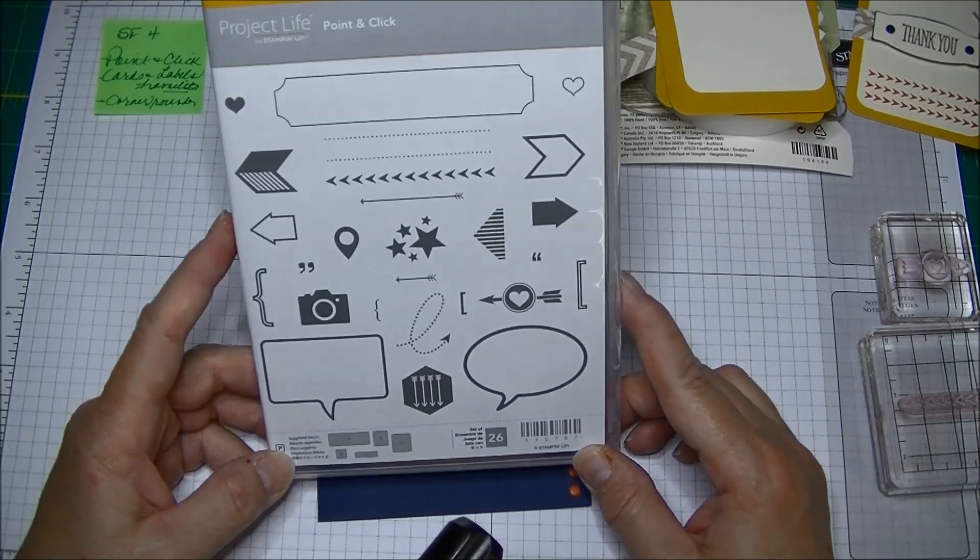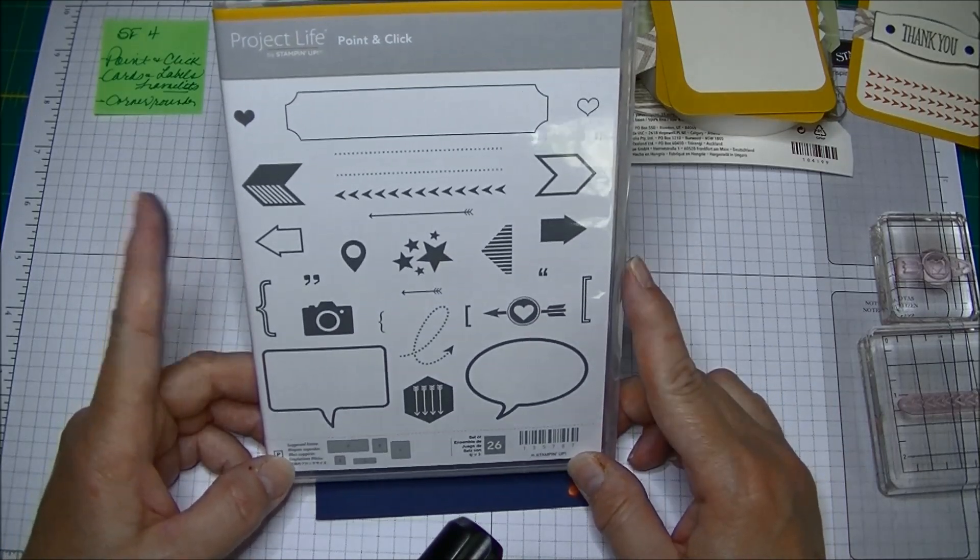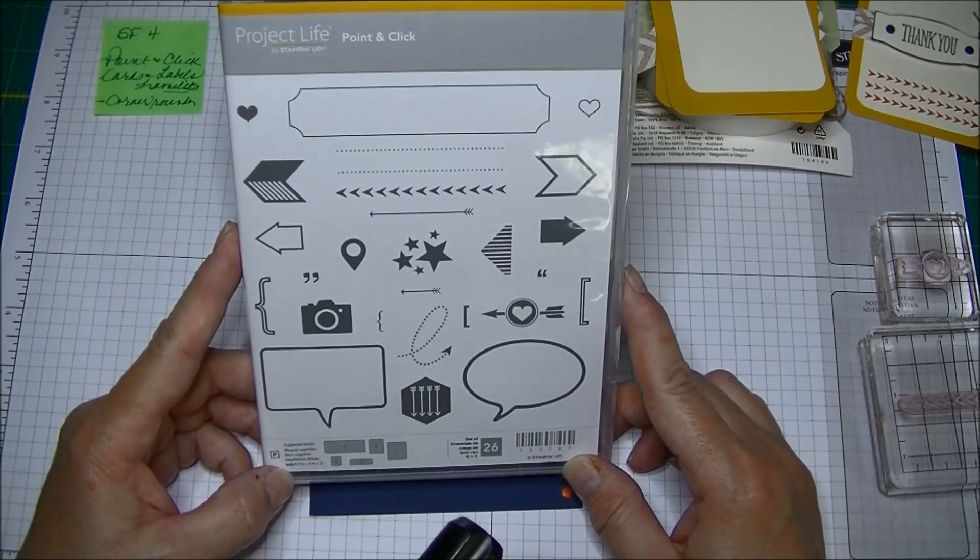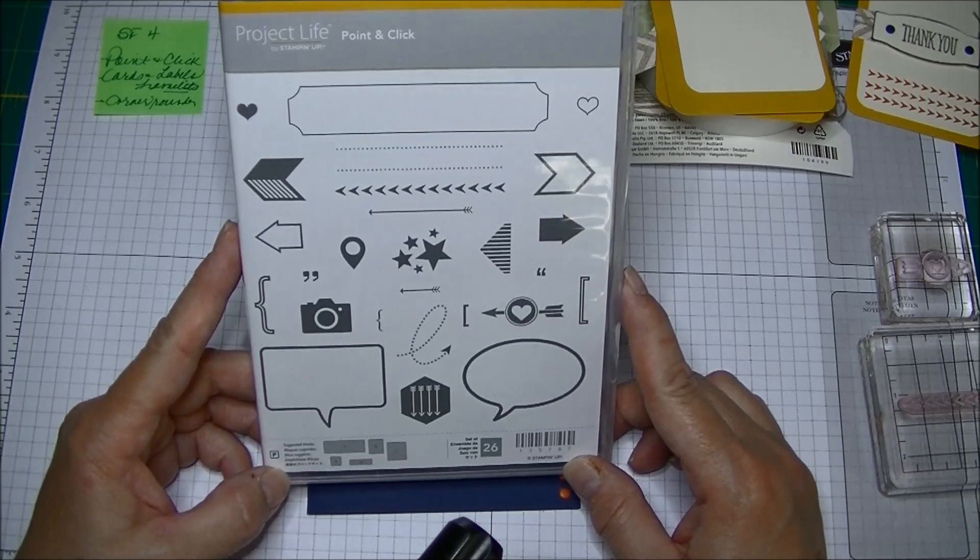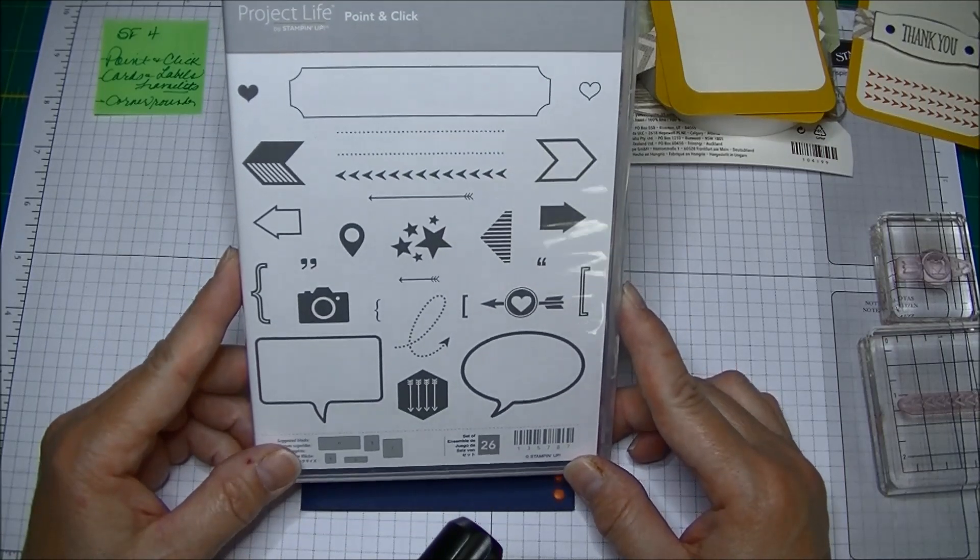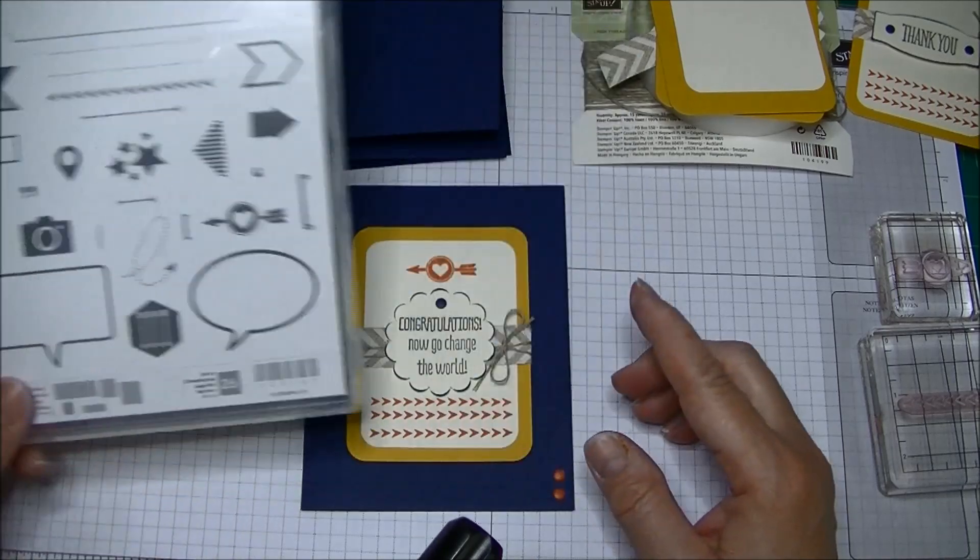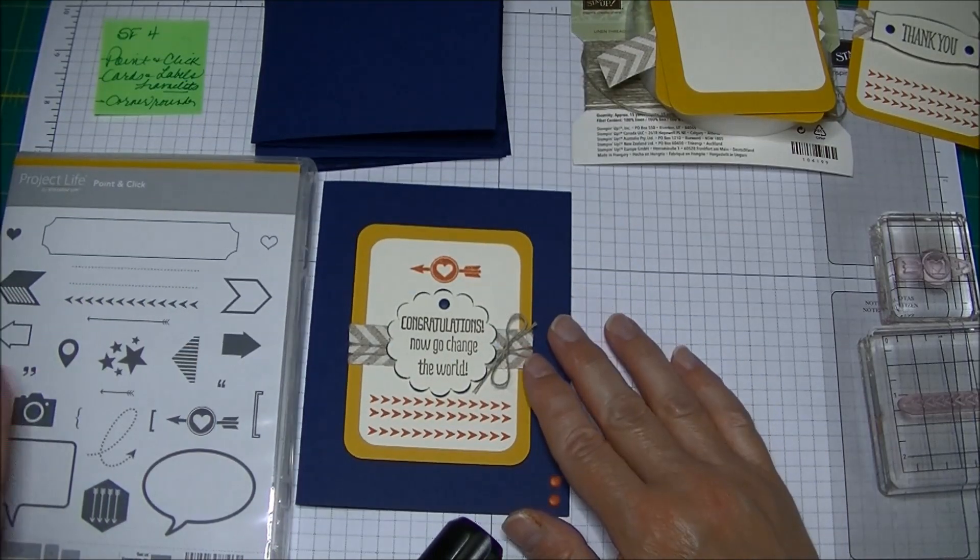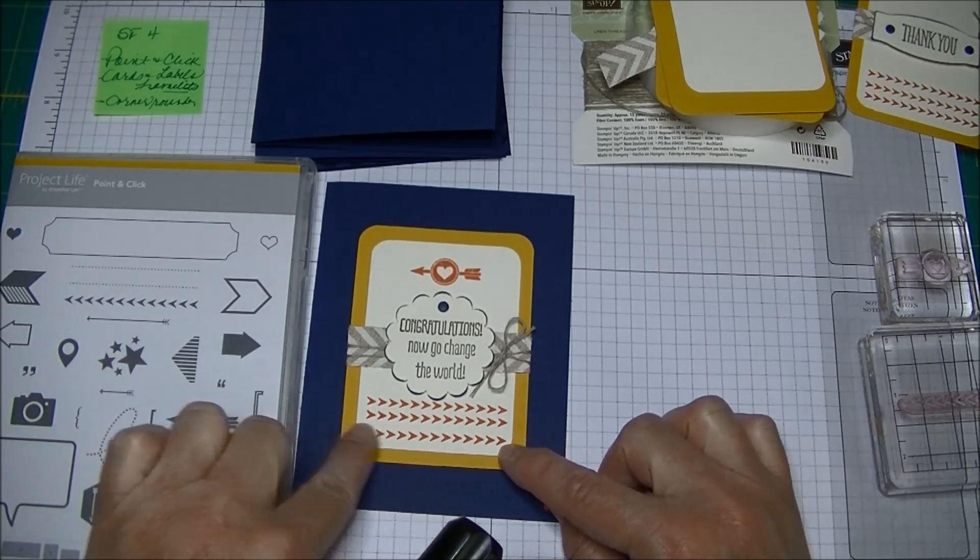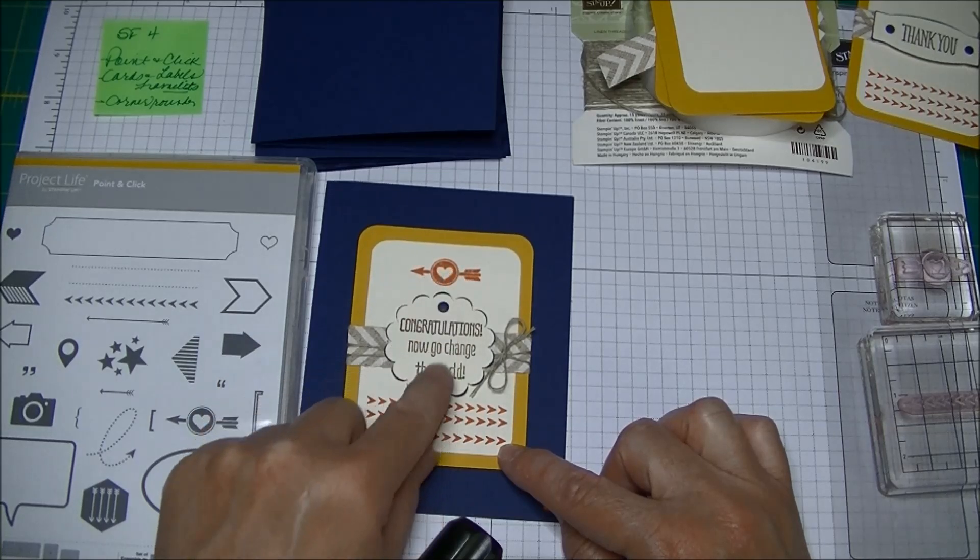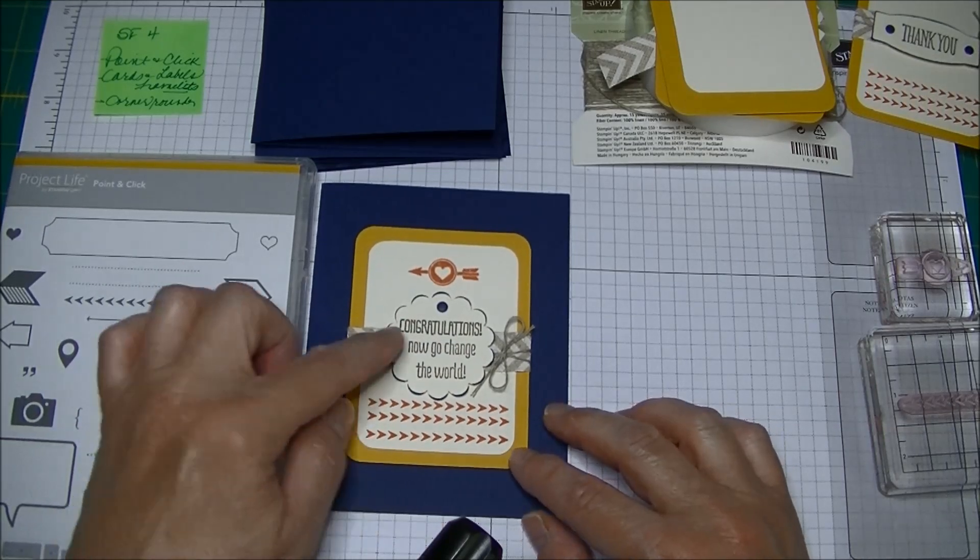We're waiting for the new catalog to come out on June 2nd for the sentiment set that goes along with this, and I cannot wait to get that sentiment set. I've used this stamp set and you can see I've used the arrows and this little heart image with the arrow. I think that's a really fun one.